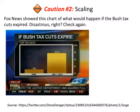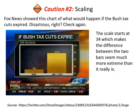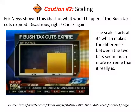Another example: Fox News showed a chart of what would happen if the Bush tax cuts expired. Disastrous, right? Well, if you check again, you can see that the scale starts at thirty-four, which makes the difference between the two bars seem much more extreme than it really is. If you started the graph at zero, you would see that the difference between now and January first, 2013 would actually be pretty insignificant.